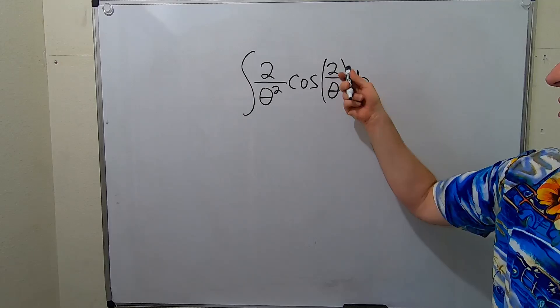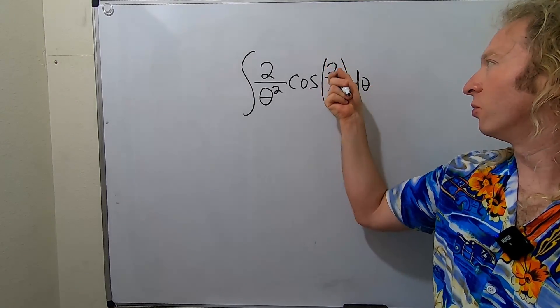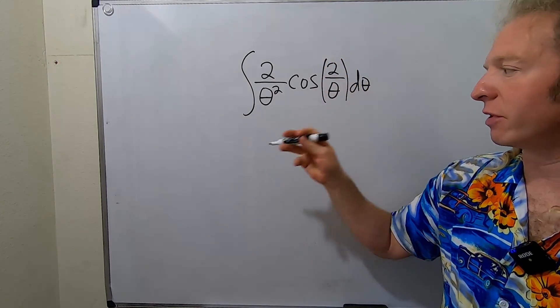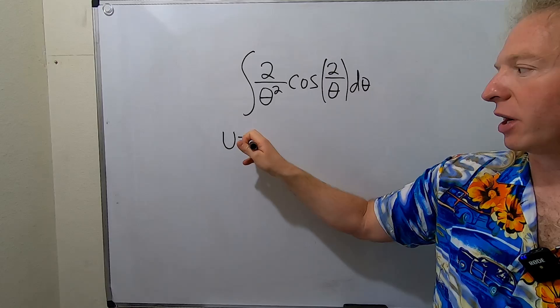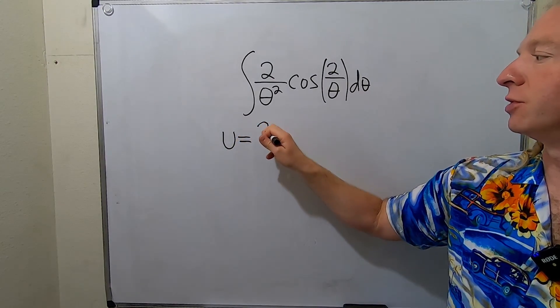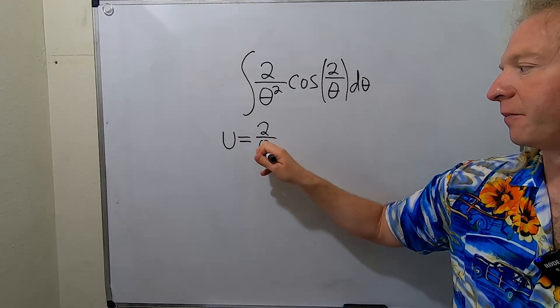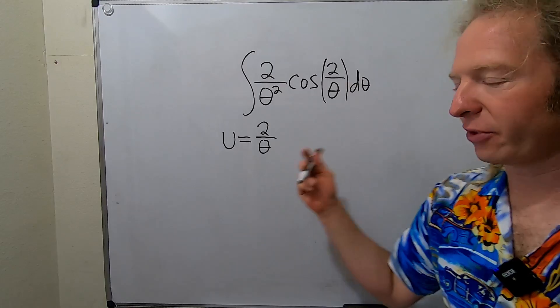Our u is typically the inside piece. The inside piece here is 2 over theta. So we'll start by trying that. We'll let u equal 2 over theta. Now we have to differentiate this.